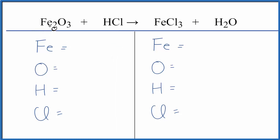Let's count the atoms up on each side. We have two Fe's, three oxygens, one hydrogen, and one chlorine. On the product side, we have one Fe, one oxygen, two hydrogens, and three chlorines.